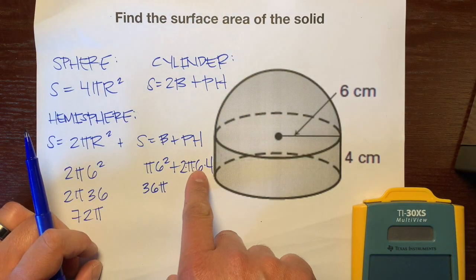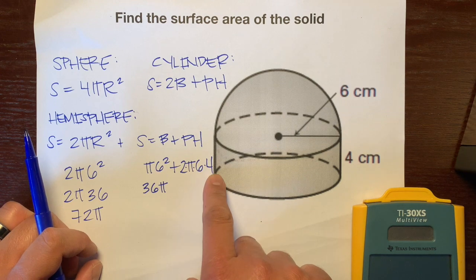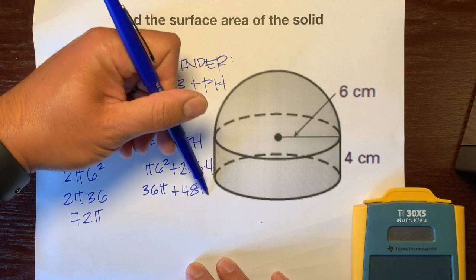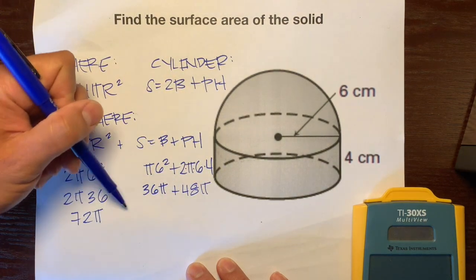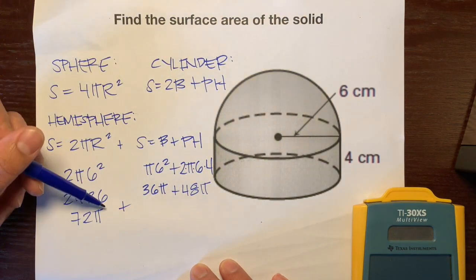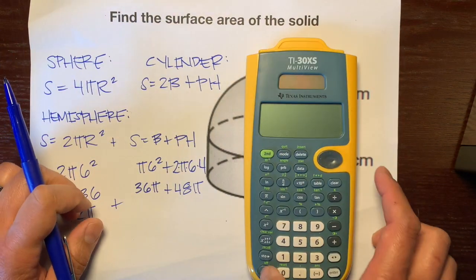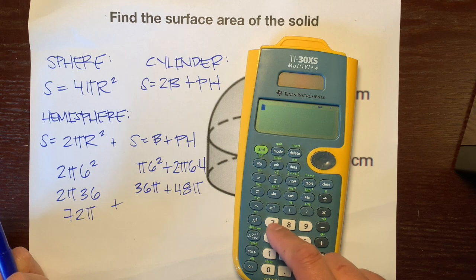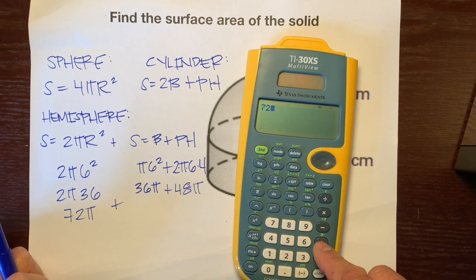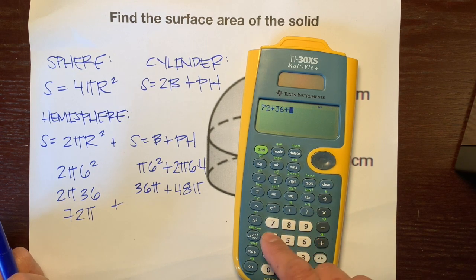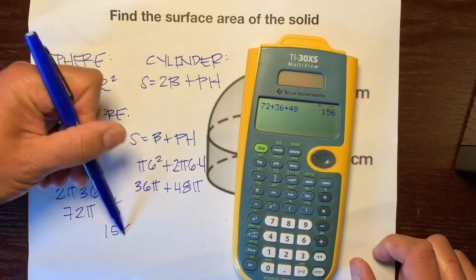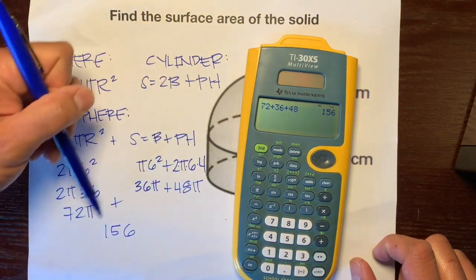We'll multiply this. 2 times 6 is 12. Times 4 is 48π. And now we're just going to add all three of these π. We have 72π here, 36π, and 48π. And let's combine those like terms. Let's use our calculator. 72 plus 36 plus 48,